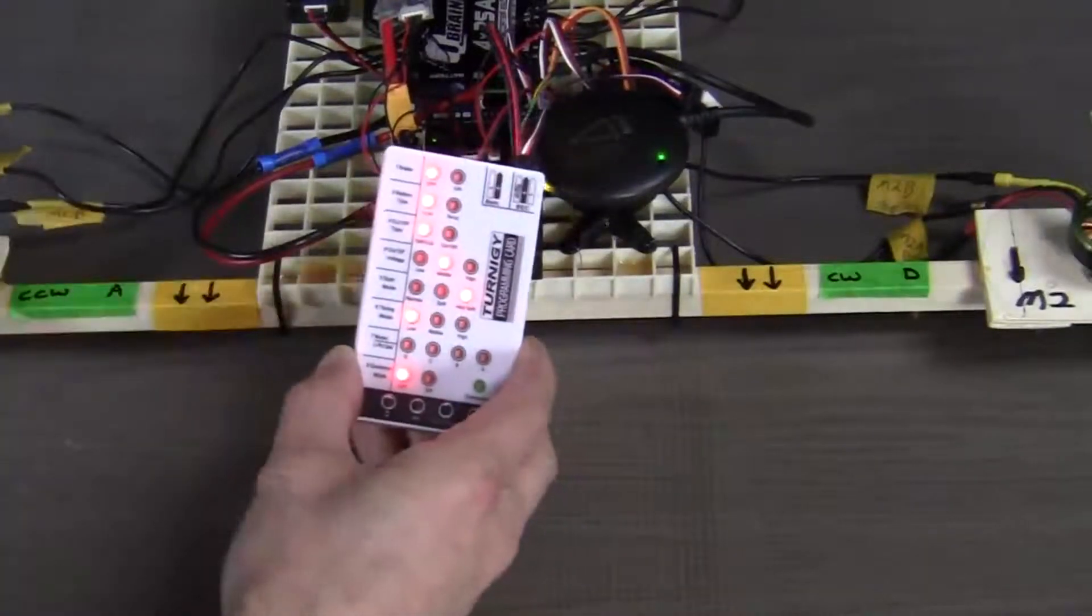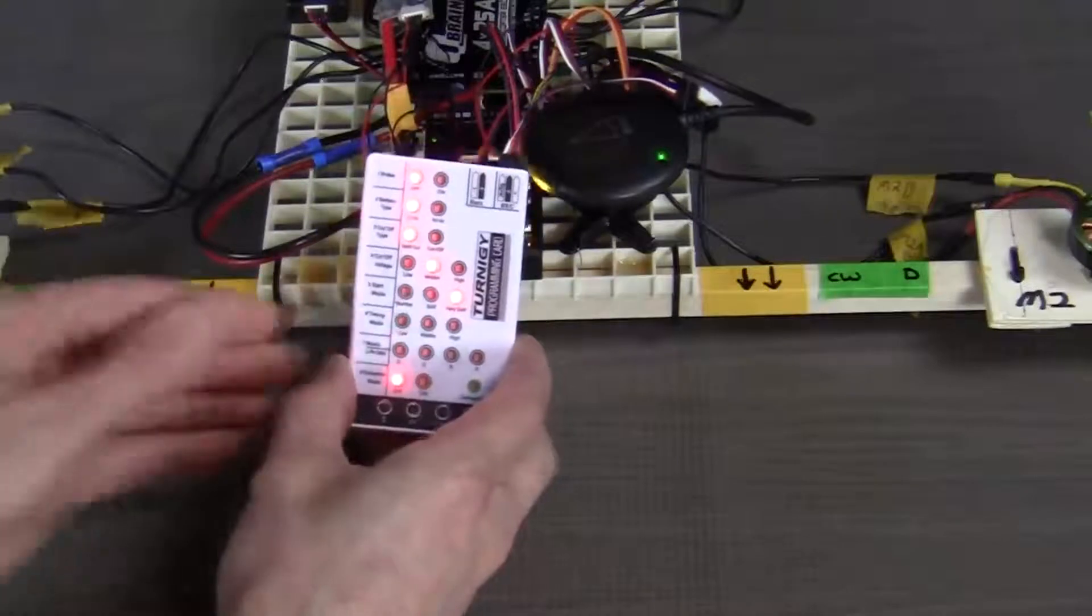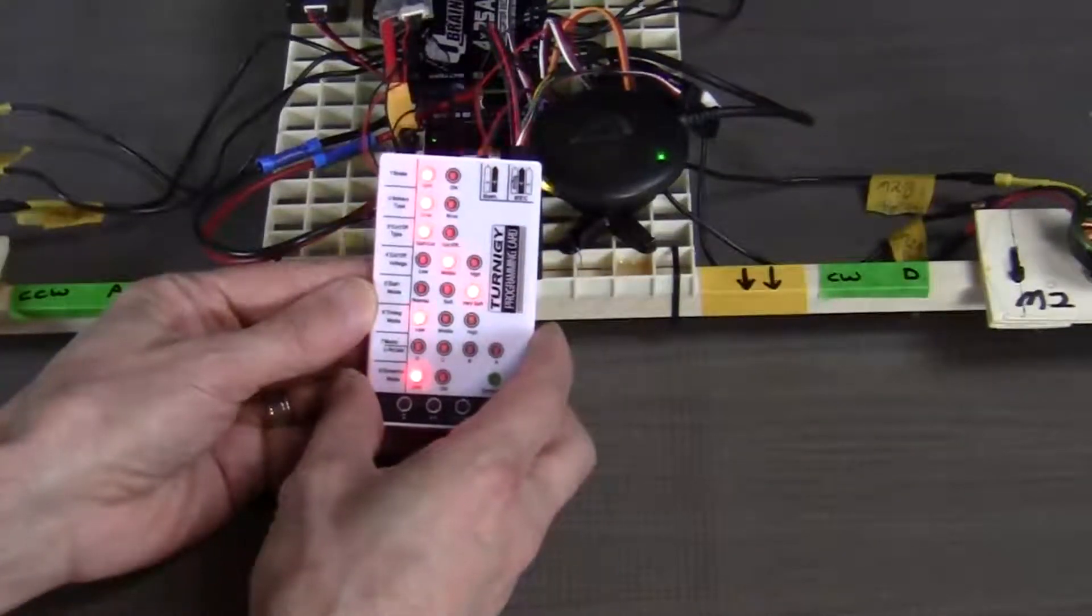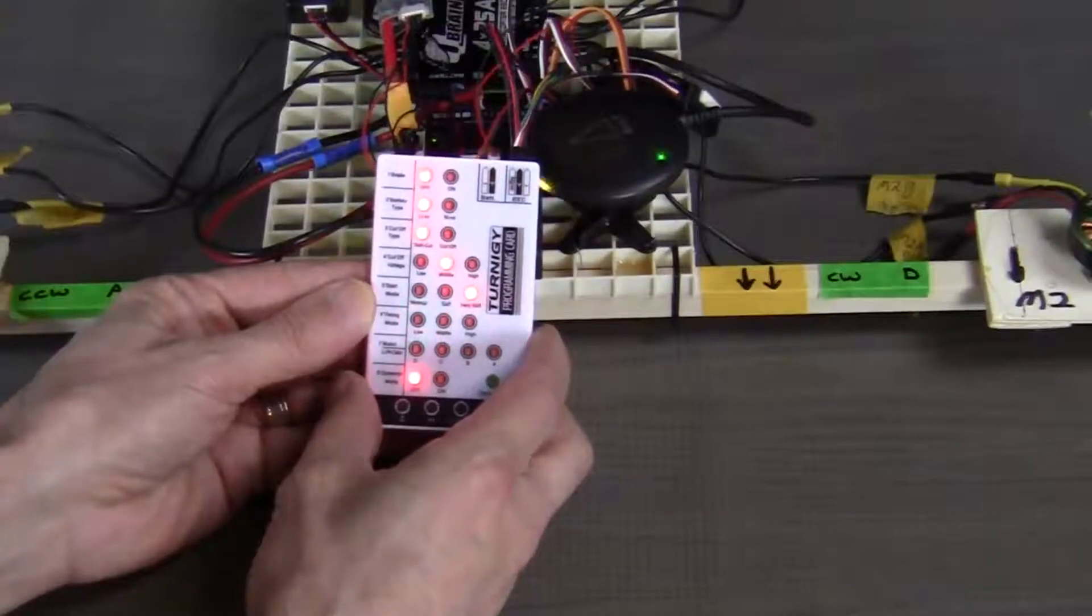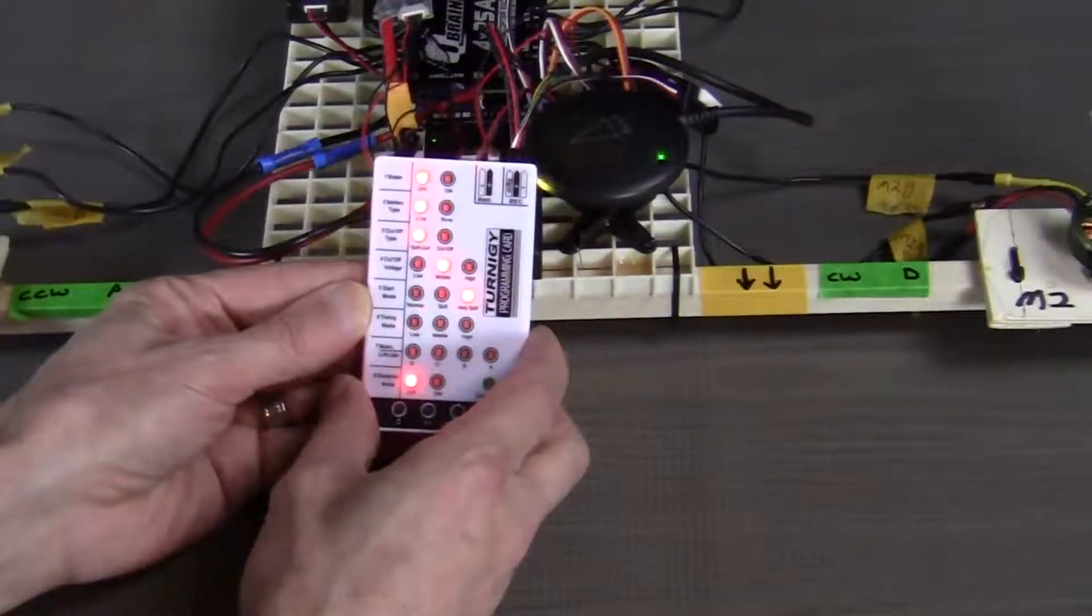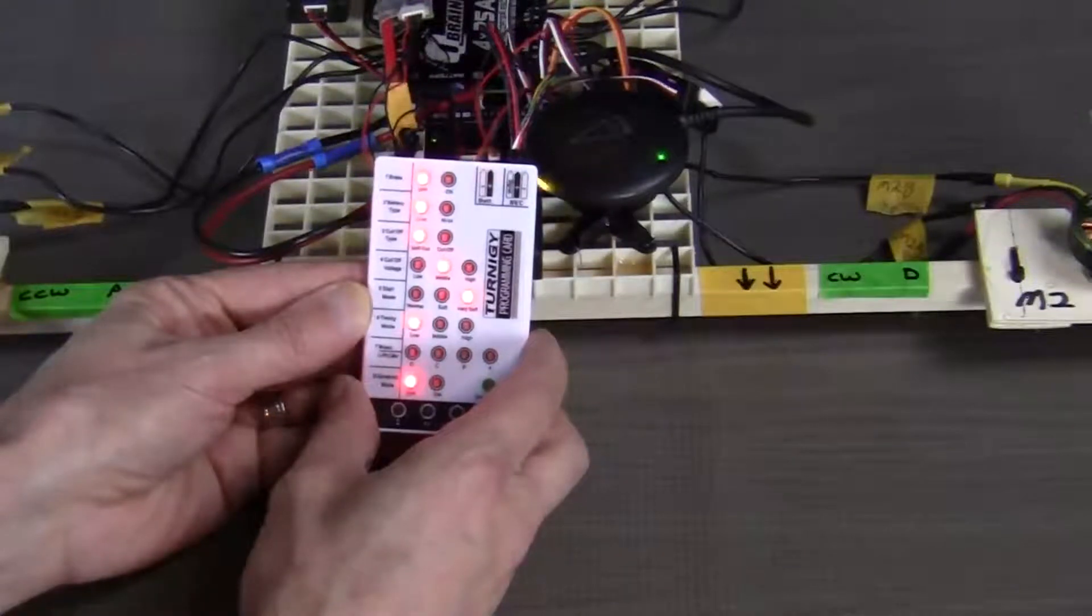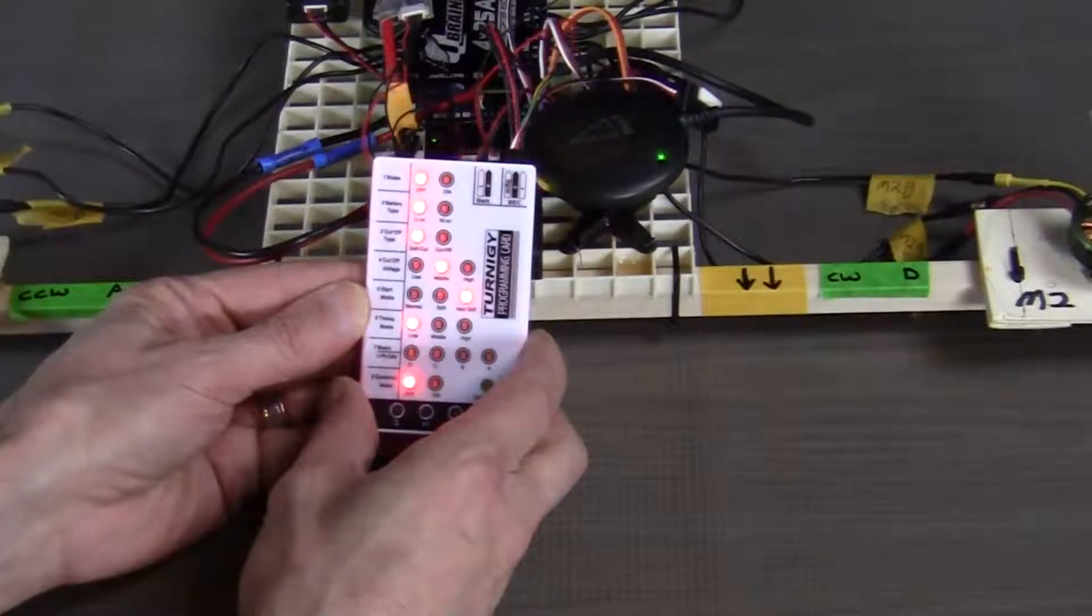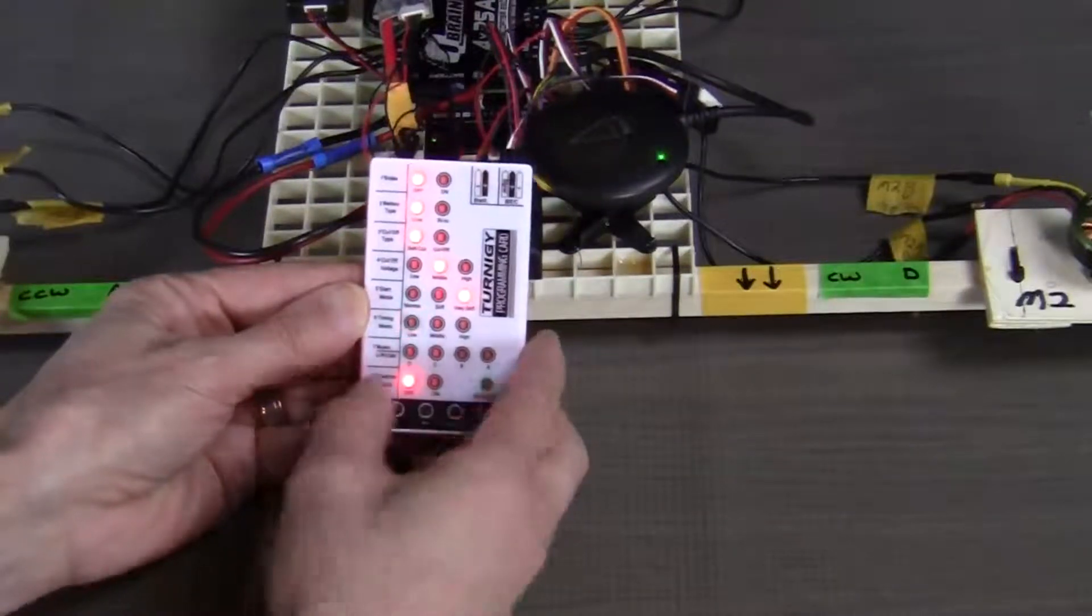Now, the timing mode. The timing mode determines the communication speed between the ESC and the motor. Our understanding of this mode is that the communication speed has more to do with the number of poles on the motors. In general, motors with a greater number of poles should be set to high, and for a low number of poles, the timing should be set to low. For this build, our choice is to set this to high.